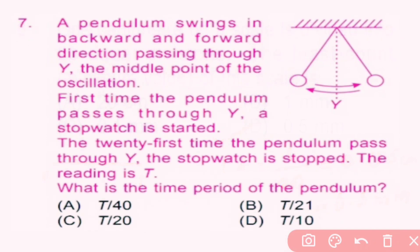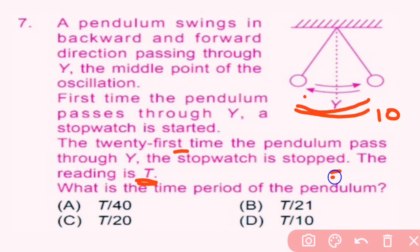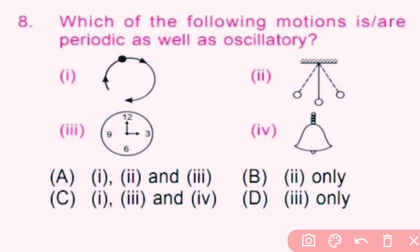So D is the correct answer. Question number 7: A pendulum swings in a backward and forward direction passing through Y, the middle point of an oscillation. The first time the pendulum passes through Y a stopwatch is started, and after 21 times passing through Y the reading is T. The time period is the time required to complete one oscillation. 21 times passing through Y means there are 10 complete oscillations and the total time is T, so the time period equals T divided by 10. D is the correct answer.